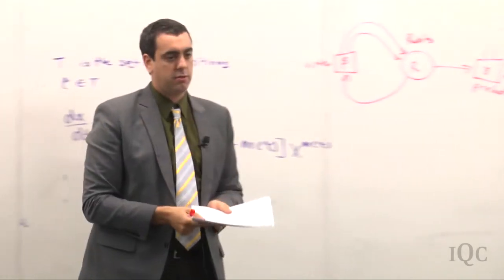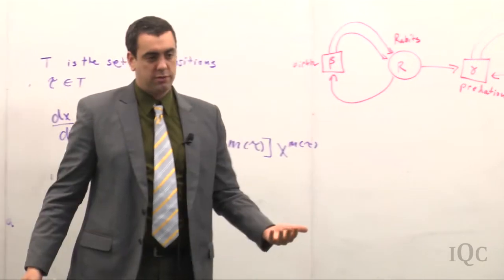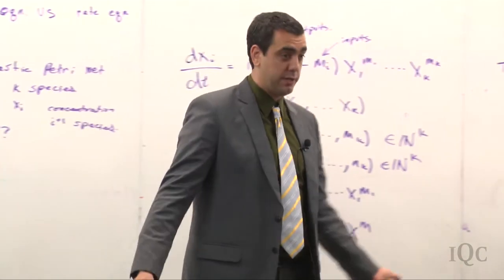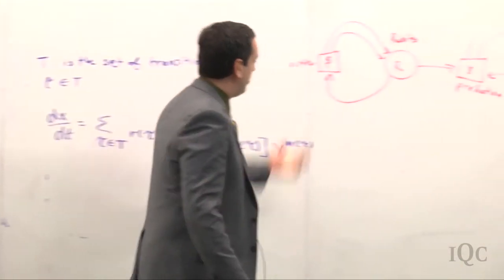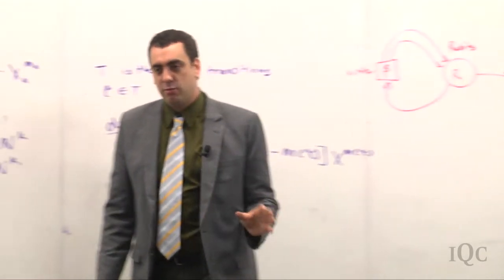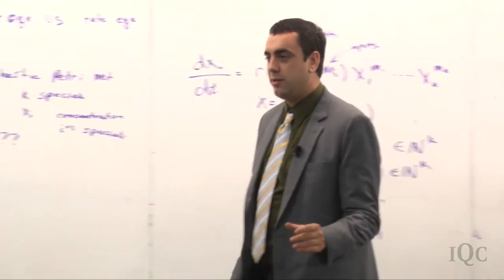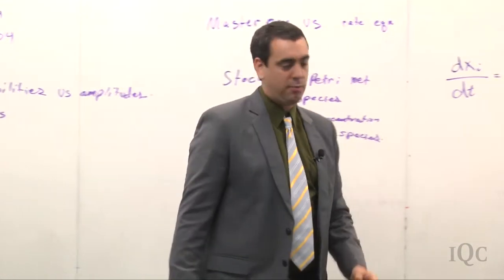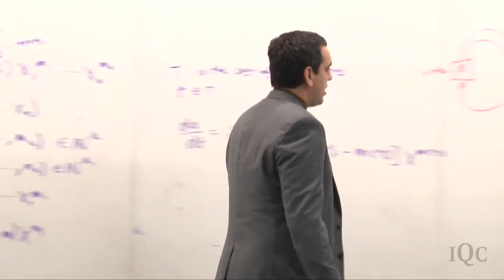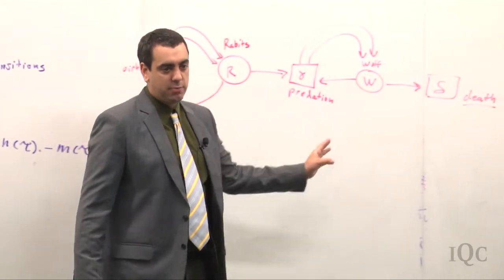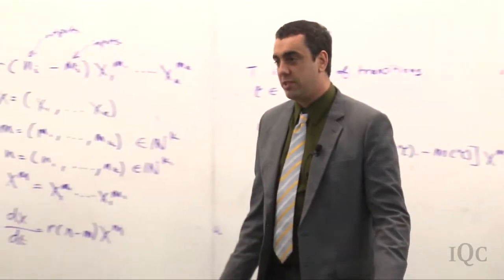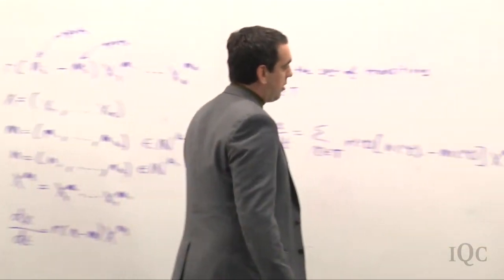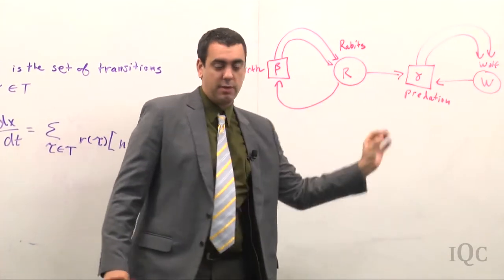This describes a system with rabbits and wolves where space doesn't matter — these animals have equal likelihood of running into each other. Rabbits can spontaneously double. When a rabbit and wolf meet, the wolf eats the rabbit and the wolf doubles — you can think of it as biomass transfer. However, wolves also die with some rate. In this approximation, rabbits live effectively forever because wolves eat them much quicker than they die, but eventually wolves disappear. You could also put a model like this on a lattice, as we'll do next week.